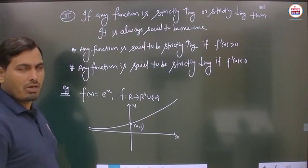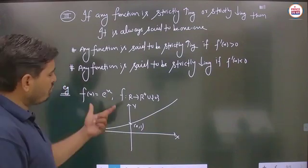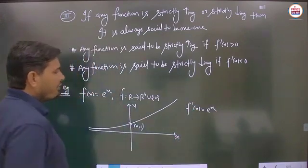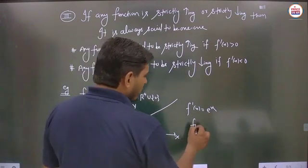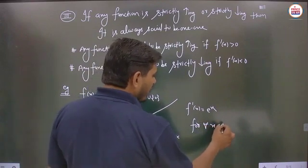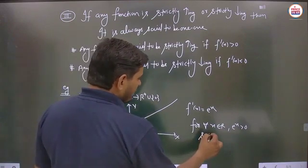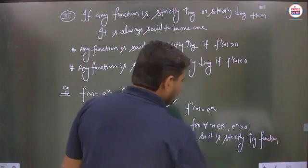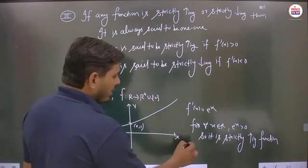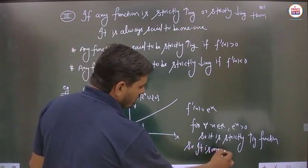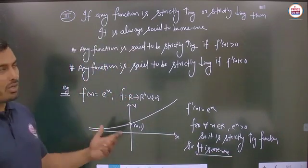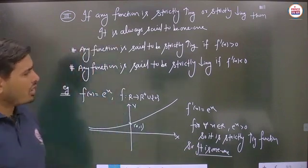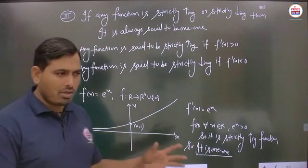Example for Method 3: f(x) = eˣ defined from ℝ to ℝ⁺ ∪ {0}. The graph passes through (0, 1) and is always increasing. The derivative f'(x) = eˣ > 0 for all x ∈ ℝ. So it is strictly increasing and therefore one-one.